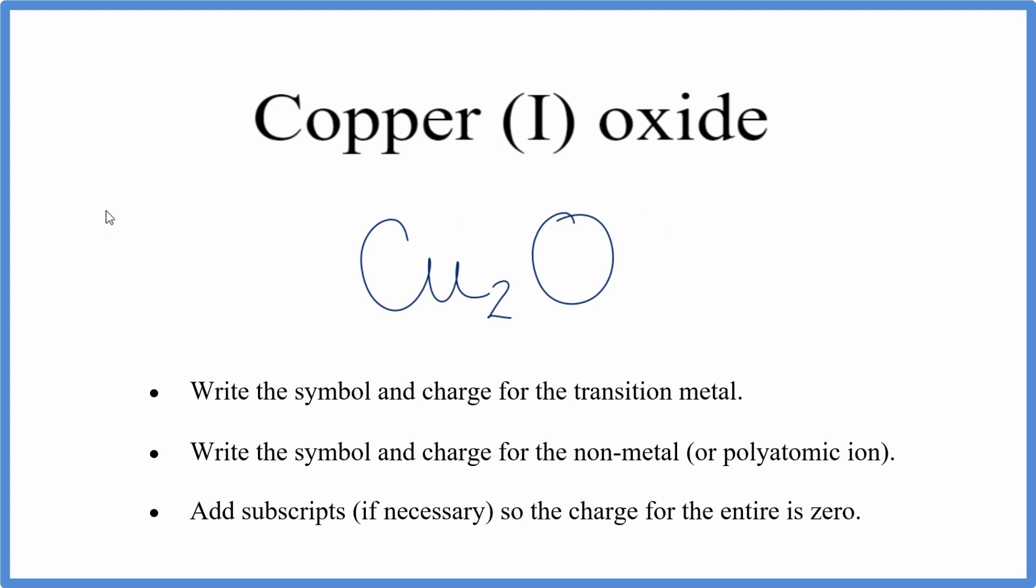That would make the formula for copper 1 oxide, Cu2O. This is Dr. B with the chemical formula for copper 1 oxide, and thanks for watching.